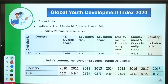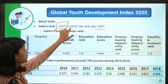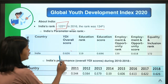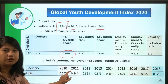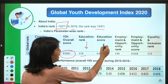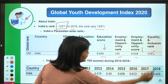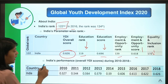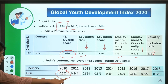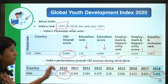India's rank is 122 in this index, improved from 134th when the index was last released in 2016. India's overall score is 0.626. In terms of individual domain rankings: education rank is 119, employment and opportunity rank is 139. India's score improved from around 0.557 in 2010 to 0.626 in 2018, showing clear improvement in youth development.